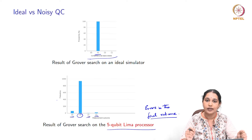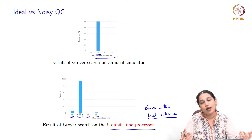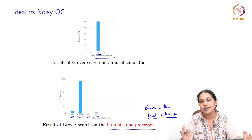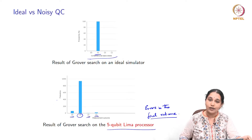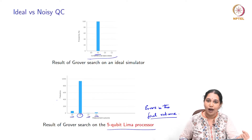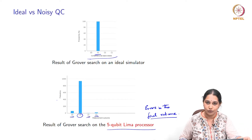Noise can lead to faulty outcomes for quantum circuits and hence for quantum algorithms. So let us try to understand this idea of noise better, and to what extent and how we can mitigate the effects of noise.